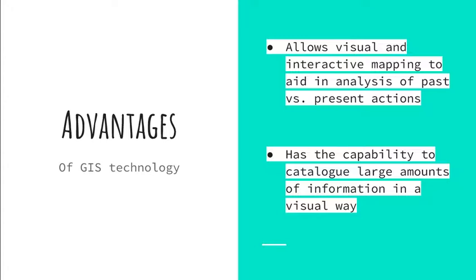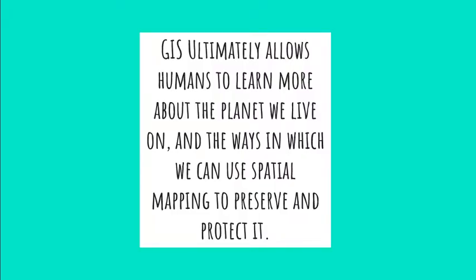So, the advantages overall of this technology: GIS allows visual and interactive mapping to aid in analysis of past versus present actions. Instead of putting maps side by side, we can combine them into different layers on one spatial area that we can see and analyze more easily. Another advantage is its capability to catalog very large amounts of information and present it visually using maps. GIS ultimately allows humans to learn more about the planet and the ways we can use spatial mapping to preserve and protect it.